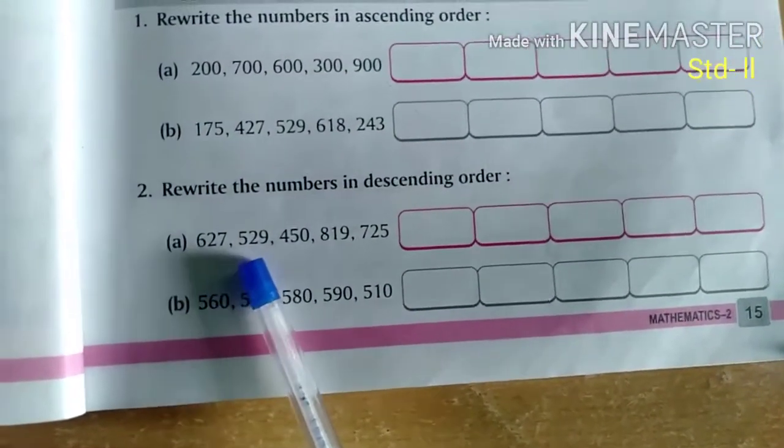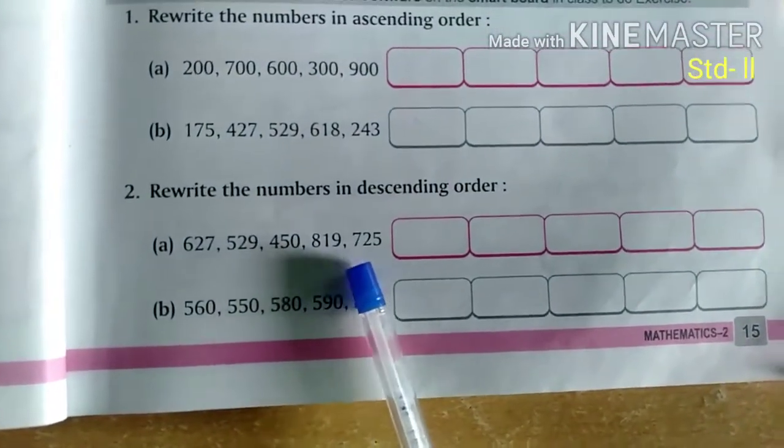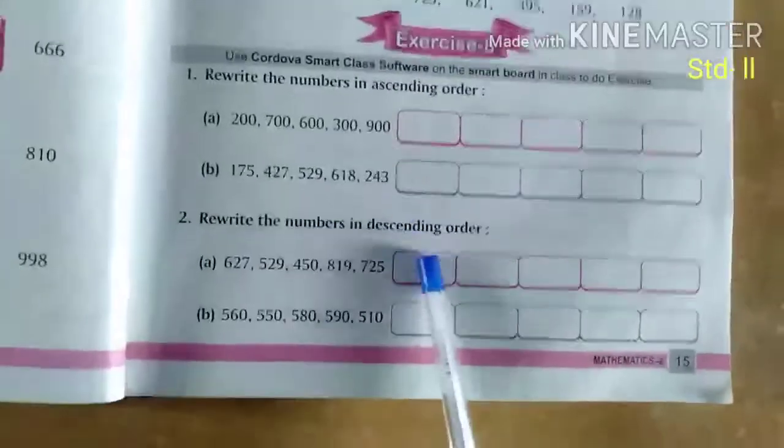627, 529, 450, 819, 725. Now which is the biggest of all?